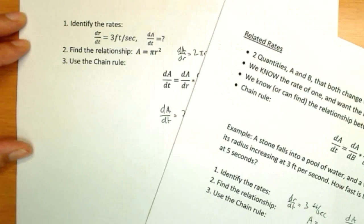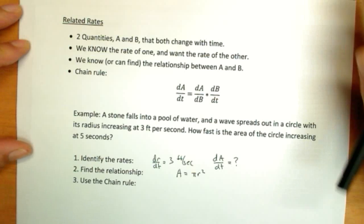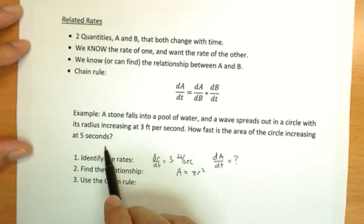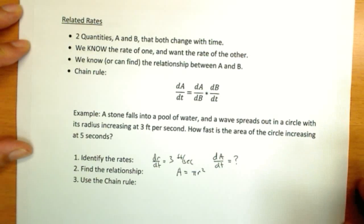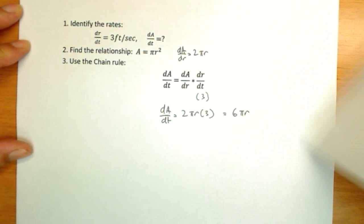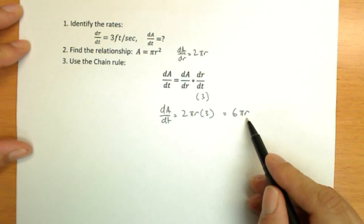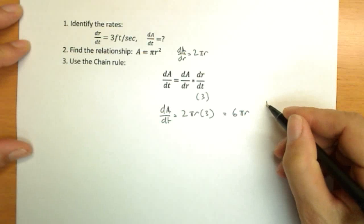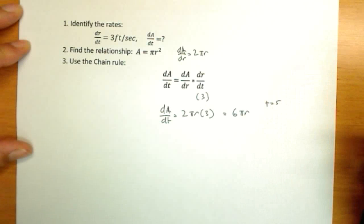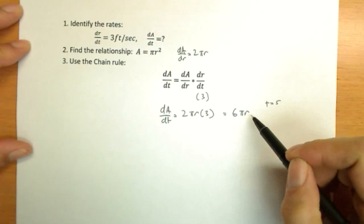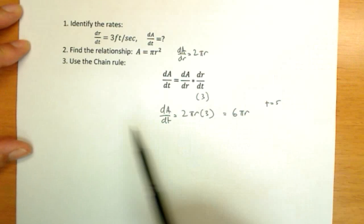Back to our original problem. We are asked to find this relationship at 5 seconds. So I'm supposed to take this problem here, which is a changing answer. dA/dt changes based on r, but I'm going to find it when t equals 5. And, well, okay, I can't plug t in. I need to figure out r. But that's not going to be hard.